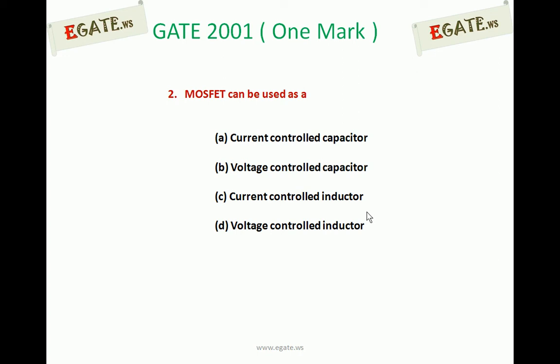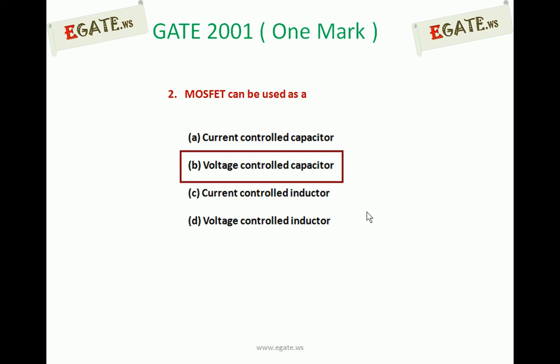MOSFET can be used as: A. Current controlled capacitor, B. Voltage controlled capacitor, C. Current controlled inductor, D. Voltage controlled inductor. The right option for this question is B — Voltage controlled capacitor.